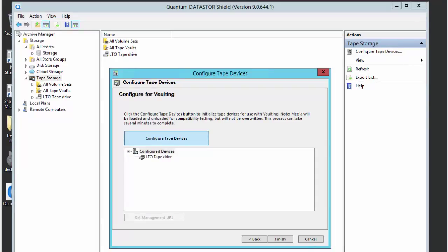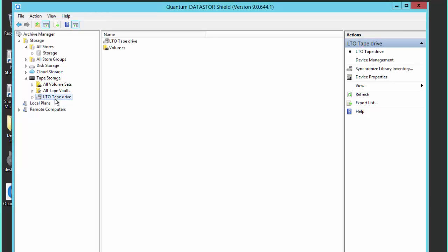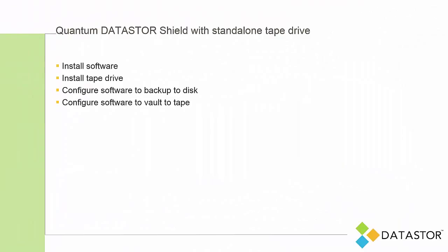Now we see that we have configured the LTO tape drive for use with Quantum Datastore Shield. We'll finish our wizard and see our LTO tape drive in the left-hand pane. Go ahead and affix the barcode labels to the tapes and set them aside. Next up, we're going to configure the software to back up to disks so that we can configure the software to vault to tape.